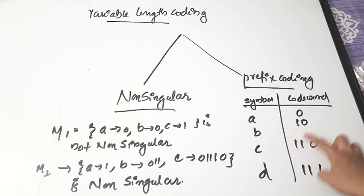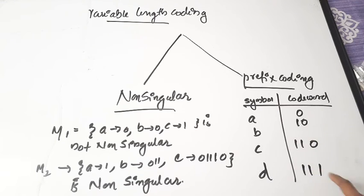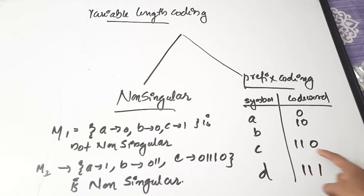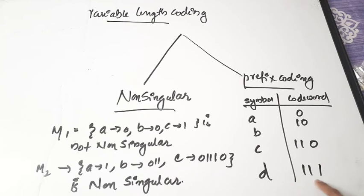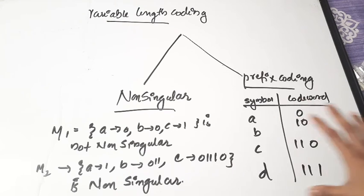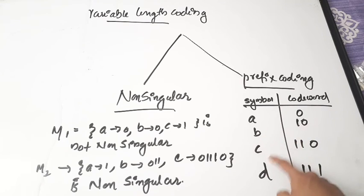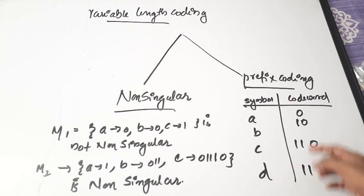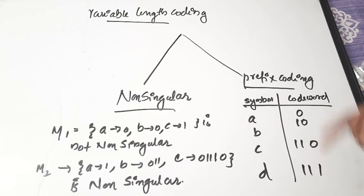There is no code word that starts with or is the prefix of another code word in this scheme. That rule is followed, and this is called prefix coding. The example A=0, B=10, C=110, D=111 shows that no code word is the prefix or beginning bits of another code word.